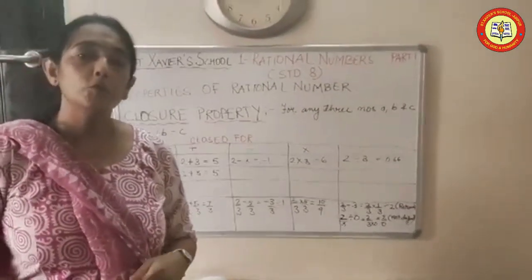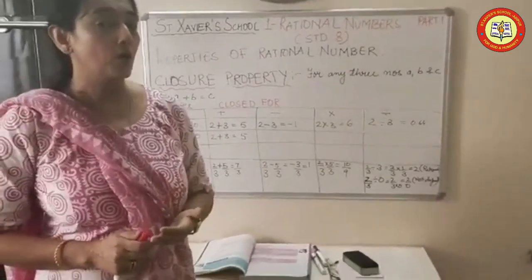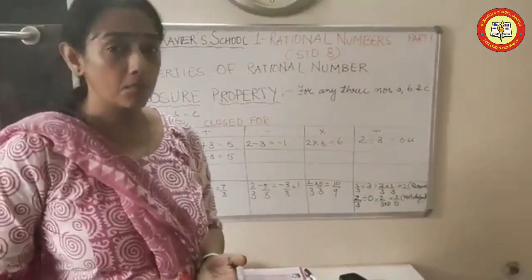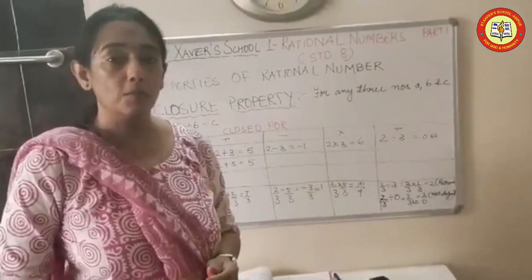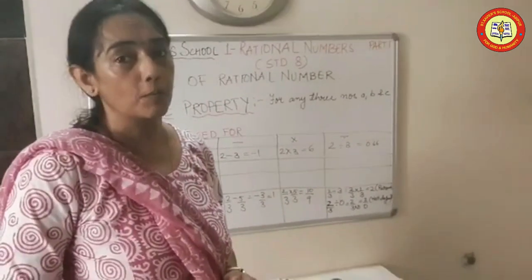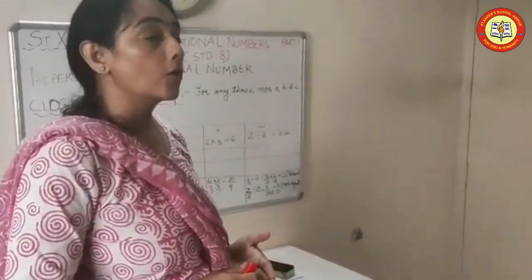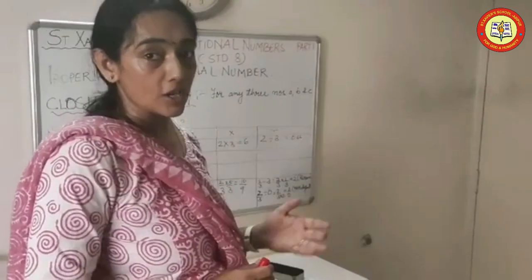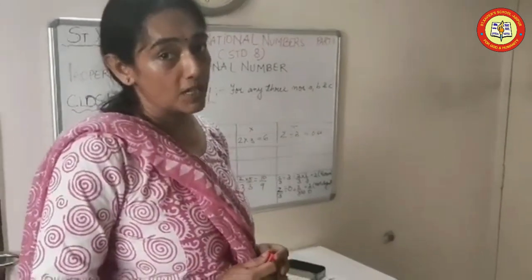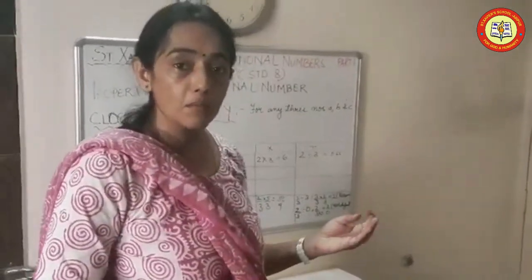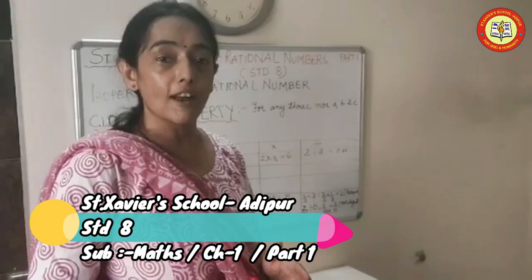Now let's come to our next topic: properties of rational numbers. We have already learned about the properties of natural numbers, whole numbers, and integers in previous classes — closure property, commutative property, associative property, distributive property, and special properties like role of 0, role of 1, multiplicative inverse, and additive inverse. Now we are going to learn the same properties for rational numbers.